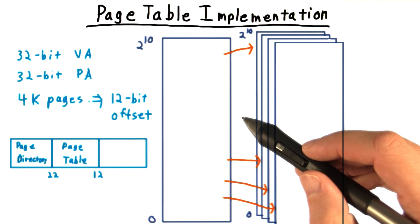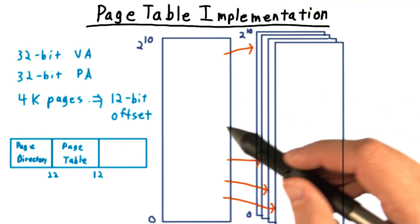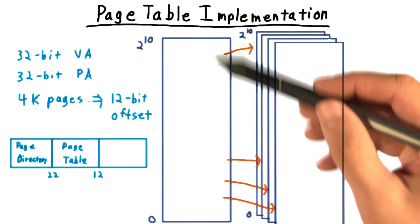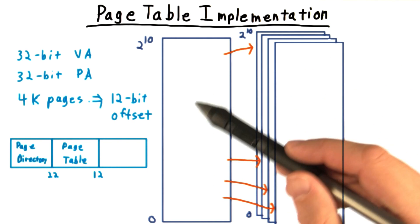So instead, page tables are done in a hierarchical way. In our 32-bit example, the highest order 10 bits are used as an index into a top-level page table. The contents of this page table then give us the base address of another page table.